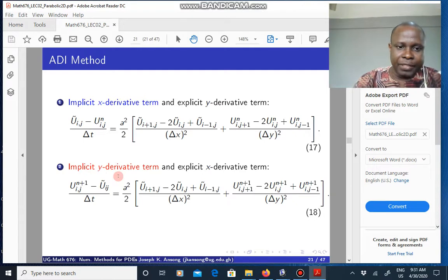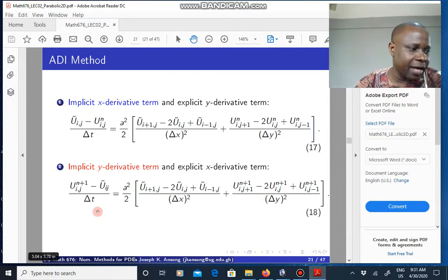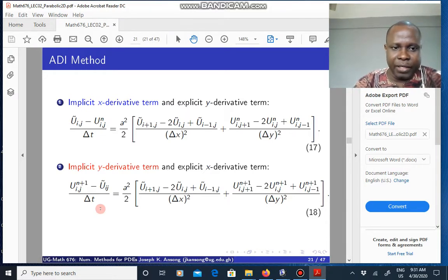Then in the next step, step two, you reverse the direction or the sweep in that it is implicit in the y. So right now that we know U tilde, this is known, U tilde is known. Now we're going to solve it for the actual solution at time level n plus 1. So in the y, it is implicit because these are not known, it is explicit in the x in this case. Again, because now this is more like the implicit case in the y direction for a 1D problem, the resulting matrix is tridiagonal again, and so you can solve using the Thomas algorithm.